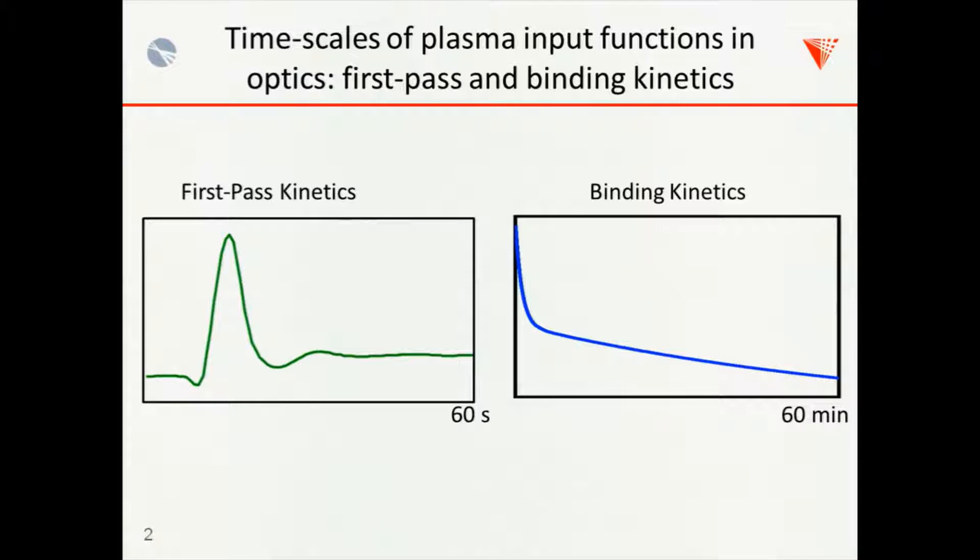I think of plasma input functions in sort of two camps. Obviously there's a continuum between these two things, but I think of plasma input functions in terms of either whether you want to look at the first pass kinetics, which is very quick time scale, so maybe on the order of a minute. You'll see like the first pass and then maybe even recirculation, a second pass, something like that in your tracer. However, most kinetic studies, binding studies, are more interested in long term plasma input curves that often look like bi-exponentials or something like that, where you're interested in the plasma input function over hours.